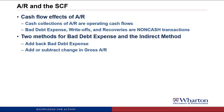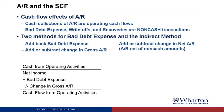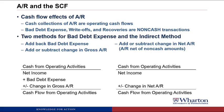There are two methods for how bad debt expense could show up on the statement of cash flows under the indirect method. First, you could add back the bad debt expense and then add or subtract the change in gross accounts receivable. So starting with net income, you add back bad debt expense as a non-cash expense, then subtract or add the change in gross accounts receivable depending on whether it went up or down. The second method is just to add or subtract the change in net accounts receivable — accounts receivable net of all these non-cash amounts. Both methods get you to the same place.